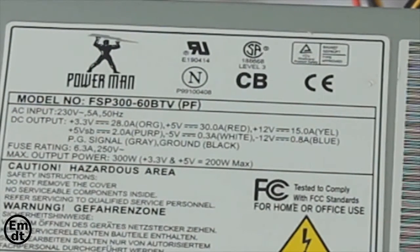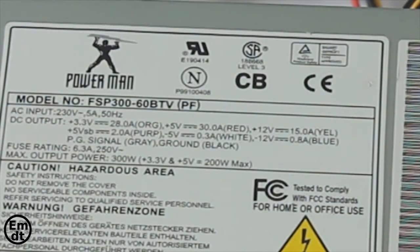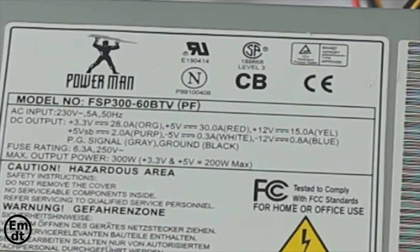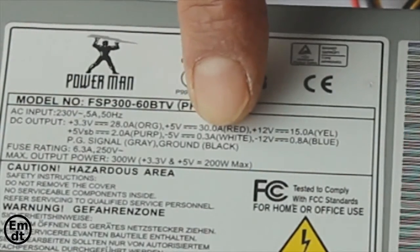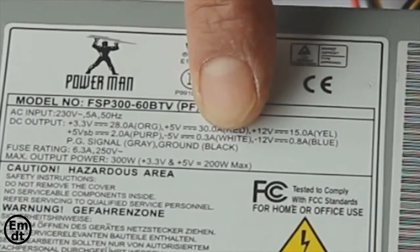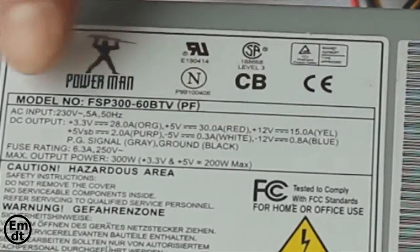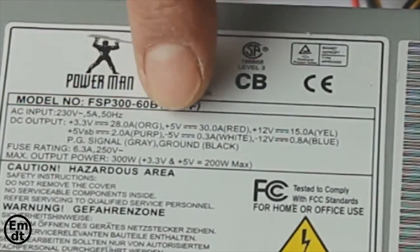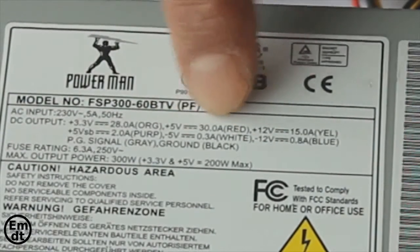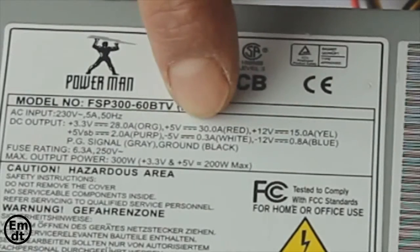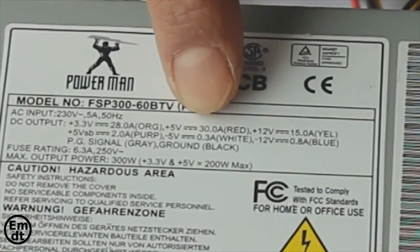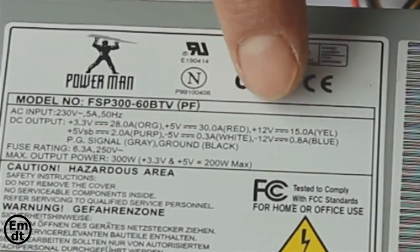If we look at the power unit closely, we can see its features. Where it says DC output, it shows the color and voltages. For example, the 5V circuit can provide a maximum of 30A. So 5V multiplied by 30A means 150W of power. And the color of plus 5V is the red color.